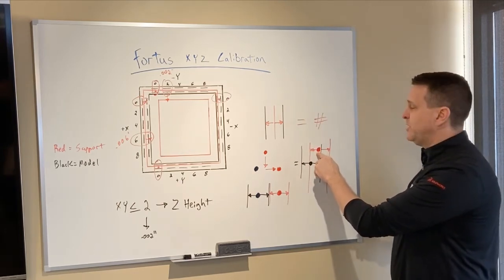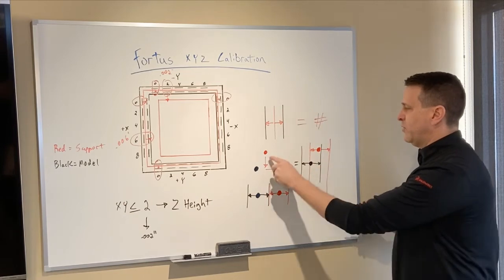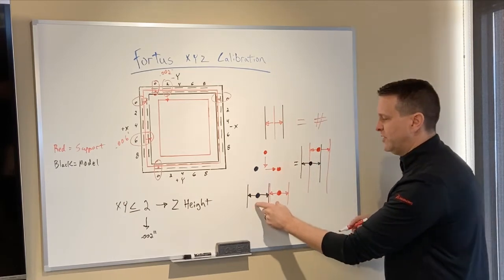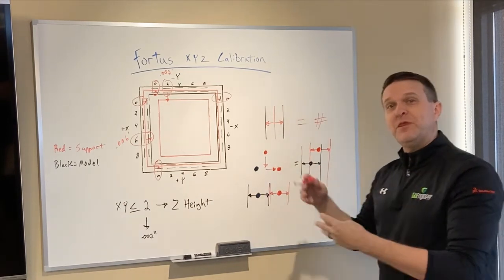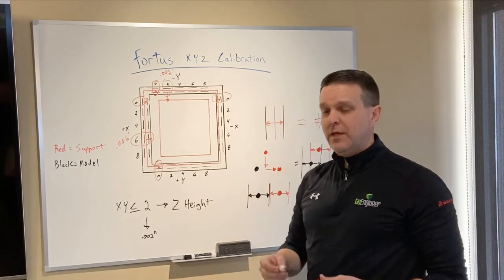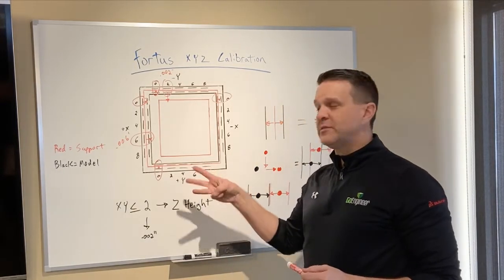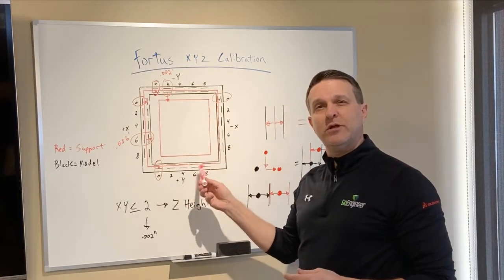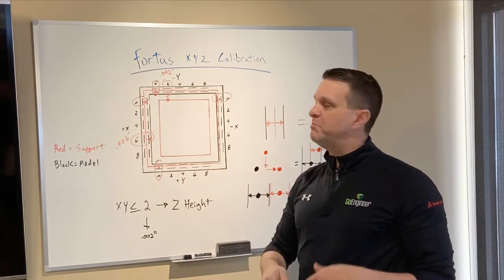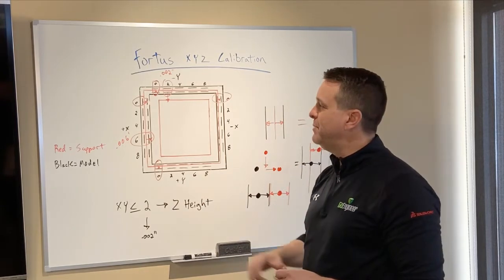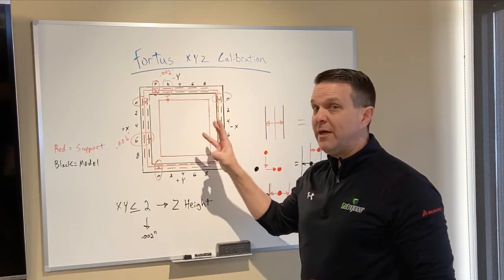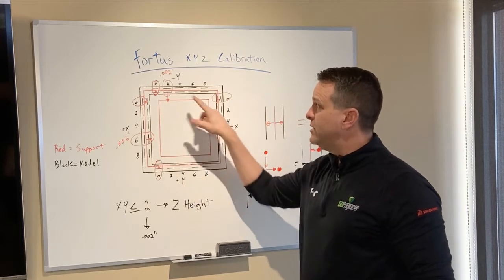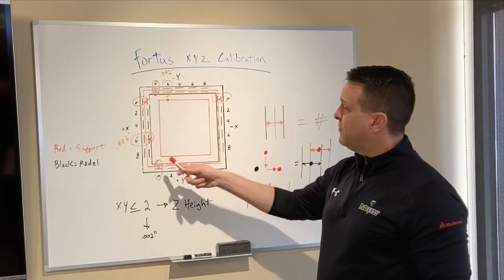So digitally, we need to tell the machine, move down and over in this representation. So this is what we end up with. You may have to do this once or twice. We always use a rule of three on this. If you get to the third time and you cannot get this calibration to work, there's another issue. Call us up at that point. We can help walk you through what that might be. But you should be able to dial this in within three runs of this calibration.